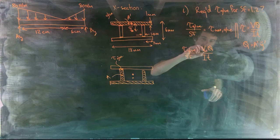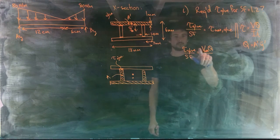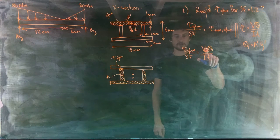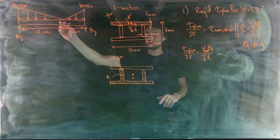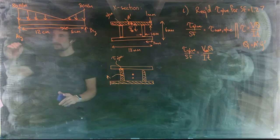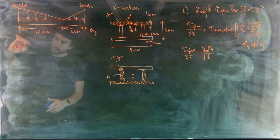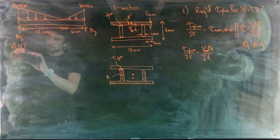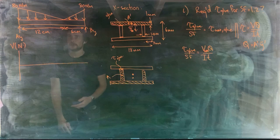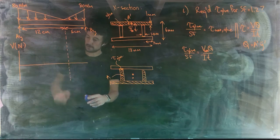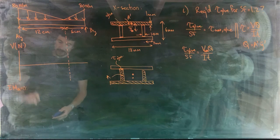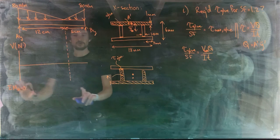For V, we want the maximum internal shear force, so we need the support reactions and shear diagram. We'll work in units of newtons. Taking moments about A to find B_y, then summing forces in the y-direction for A_y — noting this takes up the space normally reserved for the moment diagram, which we don't need here.